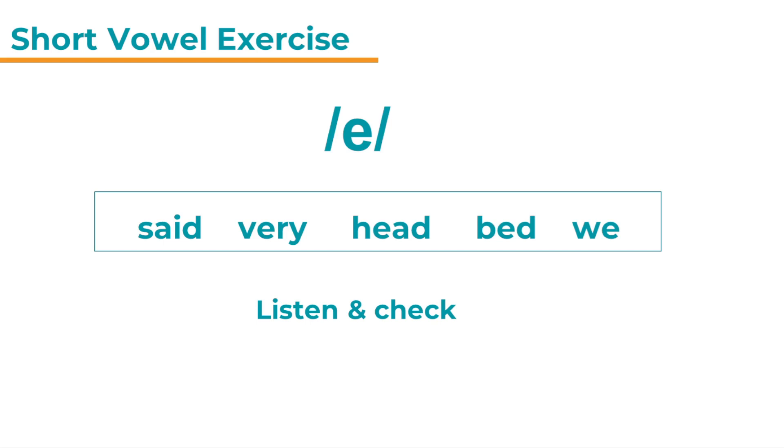And the answer is we because we contains a long iː sound and you can see e is represented by various spelling patterns. A-I, E, E-A or E. So all of those are pronounced e. Said. Very. Head. Bed. But we has a long iː.